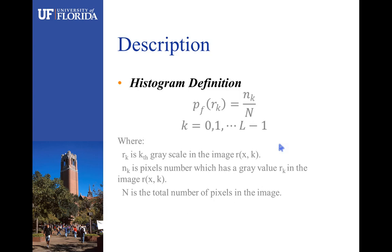P of rk, the probability of occurrence of gray level rk, equals nk over n, where rk is the gray scale in the image.